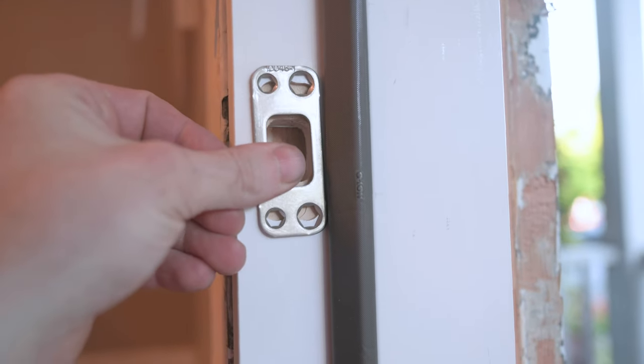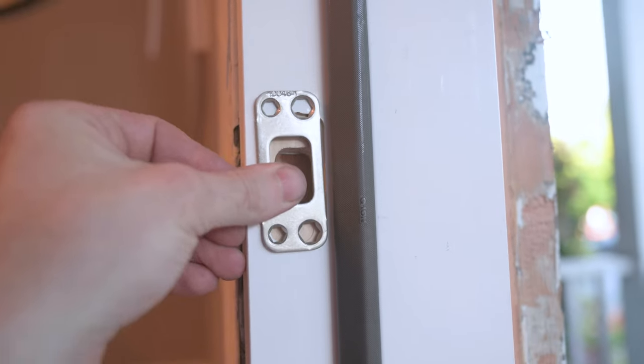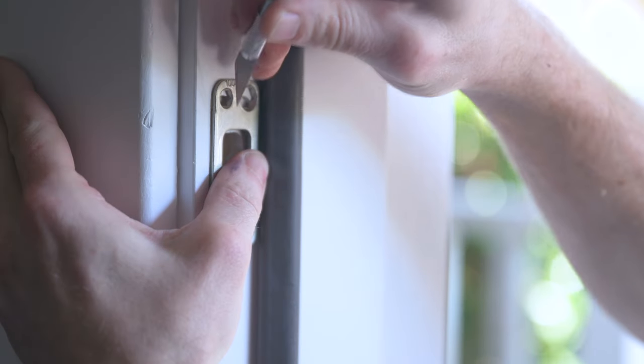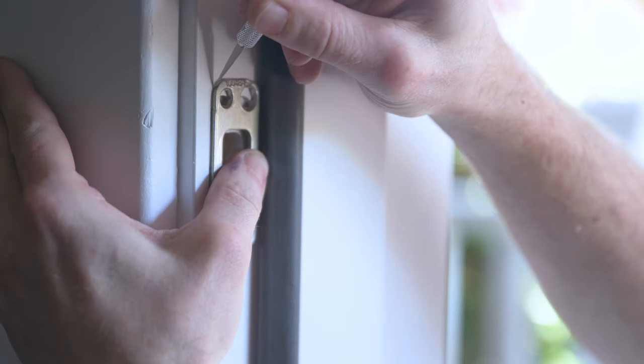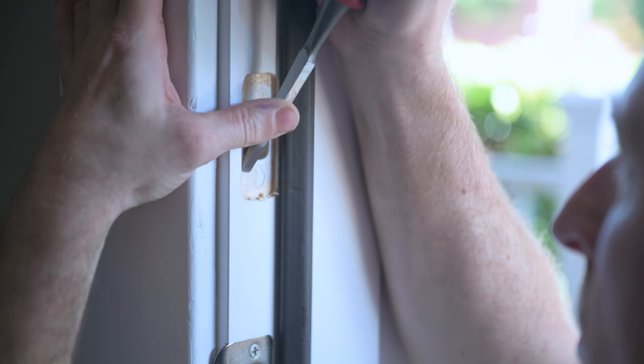Finally, we have to install the strike plate. And in my case, my doorframe came with a hole that was a bit too small for this strike plate. So here I'm using a razor to trace out the perimeter of the strike plate. So I can then chisel out this recess to the right dimensions.